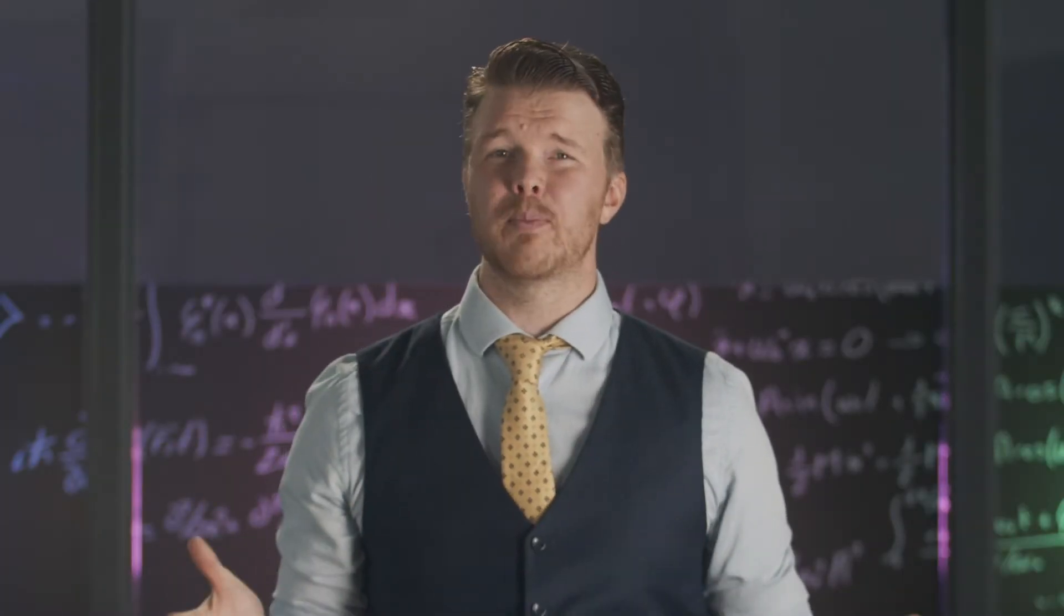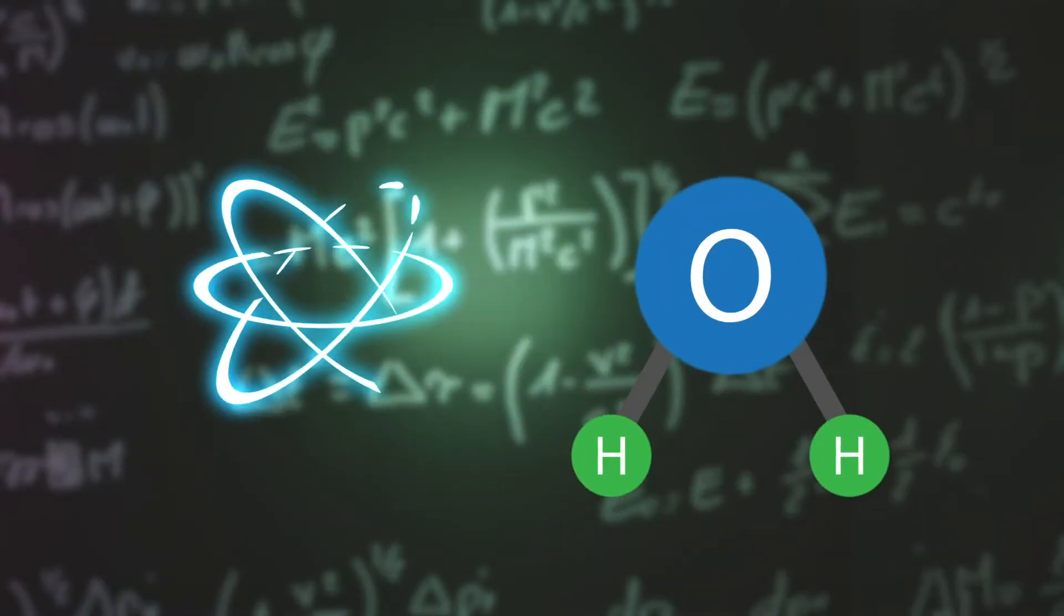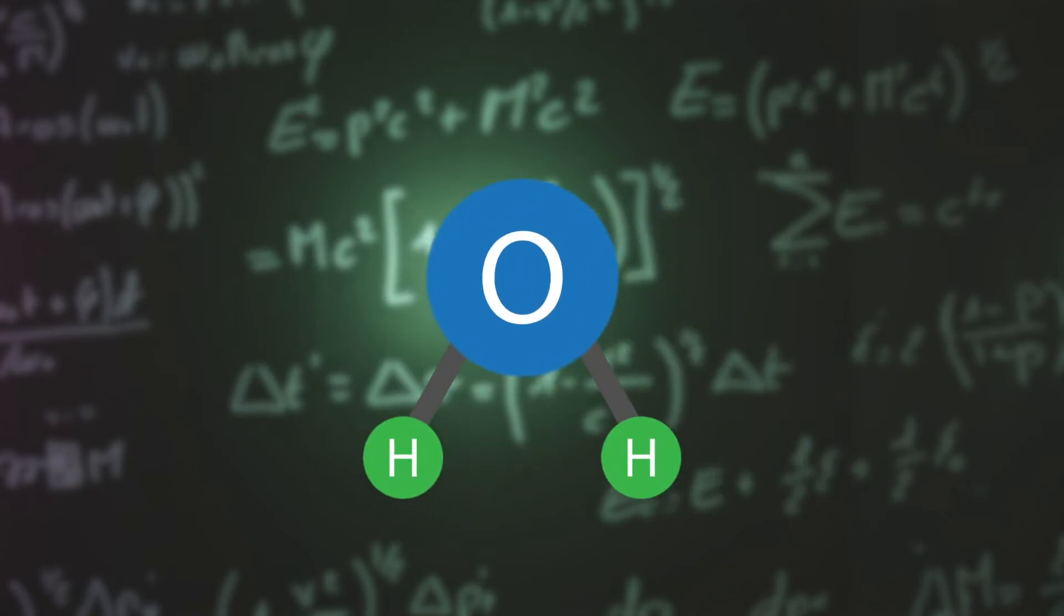Now, how does this give us power? Because we can reverse this process, putting the hydrogen and oxygen back together, producing electricity. The only byproduct? A little water.